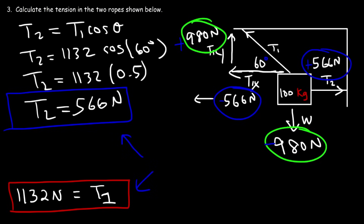Now you know how to solve common tension problems in physics. Tension is simply a force that acts along a rope. Whenever a rope transmits a force — typically by a pulling action — that force acting through the rope is the tension force.